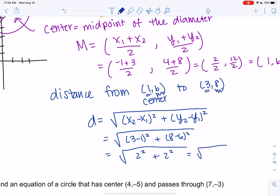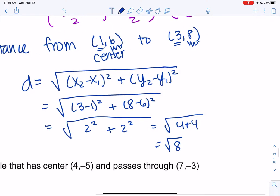So we get the square root of 4 plus 4, square root of 8. That's my radius. I will simplify it though. So 8 is 4 times 2, so square root of 4 times square root of 2. So the radius is 2 root 2. If you had used the other point, you would actually get the same radius.